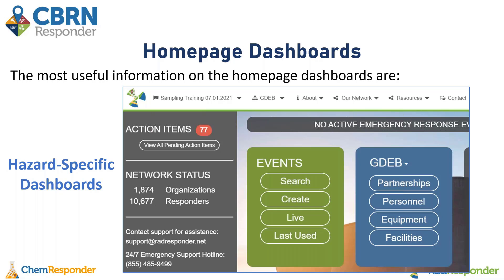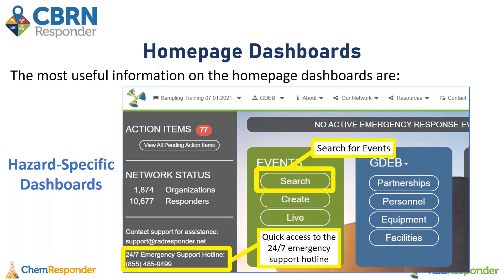Here is the hazard-specific dashboard of RADResponder. The ChemResponder one is going to look very similar with these various tiles on your homepage. This events tile is a quick link for you to search for an event. On the left-hand side, you will also see the quick access to the 24-7 emergency support hotline. The top ribbon looks the same as on the CBRNResponder homepage, and this is where you can access your events and your organization space.